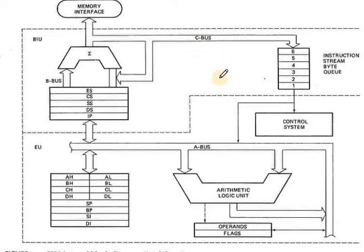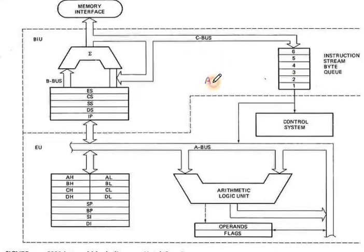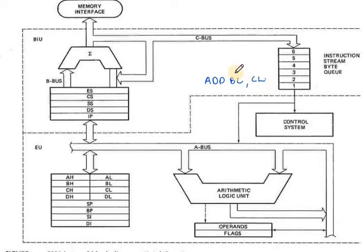Suppose we are going to get a fetched instruction — for example, ADD BL, CL. BL and CL are in the instruction. We are going to perform the addition of BL value and CL value. The execution unit processes this. One more important thing: these registers are all 16 bits in size.